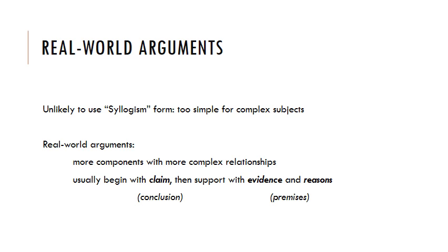Real-world arguments usually have more components — it's not just premise, premise, conclusion — and there's a more complex relationship between the components. Sometimes one premise proves another premise, which proves another premise, which then proves the conclusion. Usually we begin with our claim or conclusion, then support it with our evidence and reasons, and then come back to the conclusion again at the end to reinforce it.